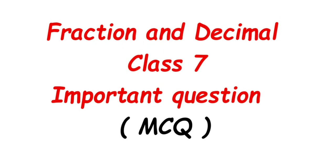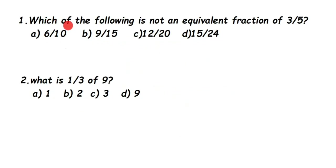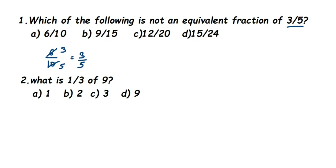The first question: which of the following is not an equivalent fraction of 3/5? They have given four options and we have to check which one is not equivalent. The best way is to do cancellation and bring each to reduced form. The first option is 6/10 — cancelling in the 2 times table: 2×3=6, 2×5=10, we get 3/5, which is the same. The second one, 9/15 — cancelling in the 3 times table: 3×3=9, 3×5=15, we again get 3/5.